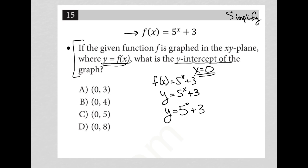So what you have to remember here is that any number to the zero power is equal to one. So this five to the zero power here just becomes a one. So this becomes y equals one plus three. And therefore, y equals four.